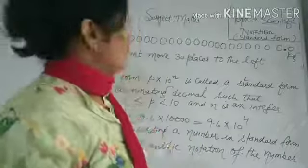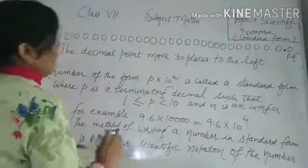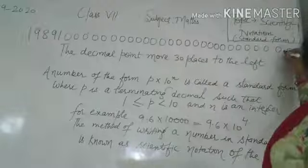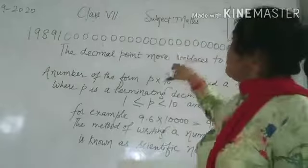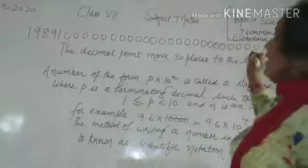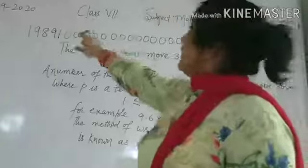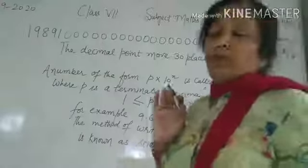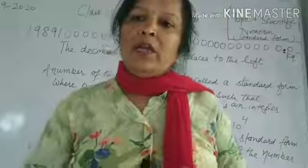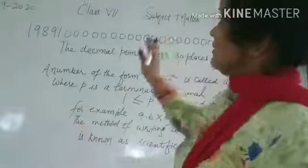We try to write very large numbers in scientific notation, also called standard form. When such a large kg weight is given to you, how will we write it in standard form? We move the decimal point 30 places to the left.